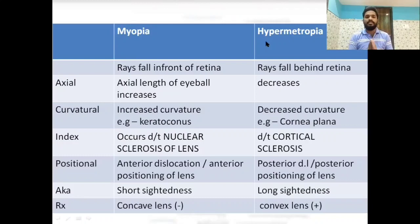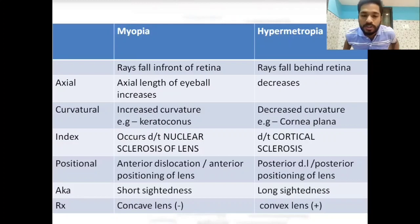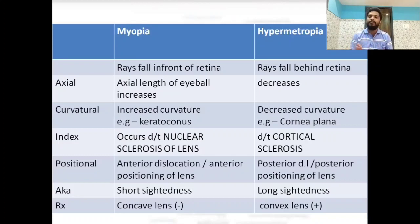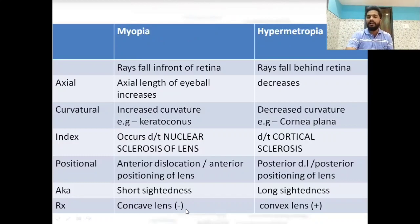For treating myopia we use a concave lens; for treating hypermetropia we use a convex lens. Astigmatism has two different focal points. It is divided into five types: compound myopic, simple myopic, compound hyperopic, simple hyperopic, and mixed. Simple myopic: one ray on retina, one in front. Compound myopic: both rays in front. Simple hyperopic: one on retina, one behind. Compound hyperopic: both behind. Mixed: one in front, one behind.